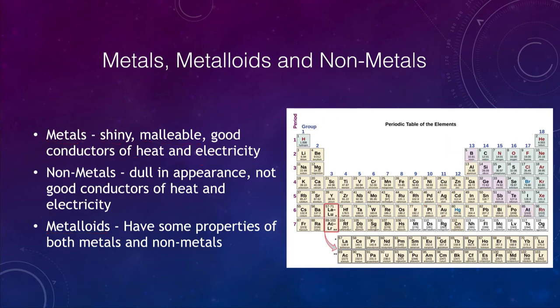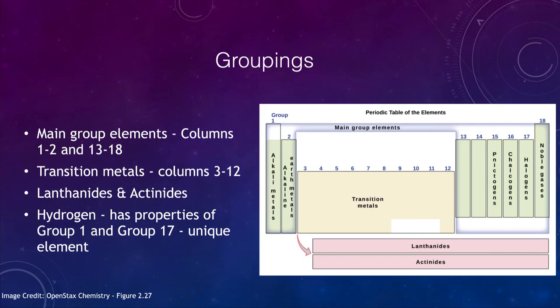Now we can look at the groupings and how everything is put together here. We have in a periodic table the main group elements, which are the first two columns and then the last six columns. So columns one to two and columns 13 through 18. Those are the alkaline metals and the alkaline earth metals on the left hand side, and some others such as the noble gases and the halogens on the right hand side.